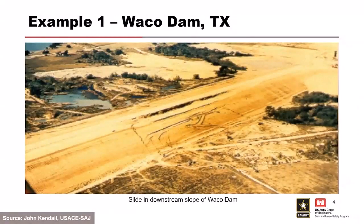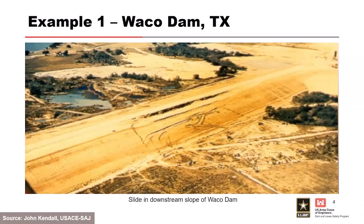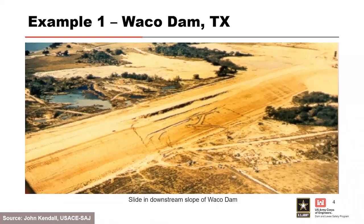The first example is Waco Dam, an Army Corps dam. During construction in 1961, a slide occurred when the embankment was approximately 83 feet tall. The slide moved about 22 feet downstream and was attributed to excess pore pressures in the clay shale foundation, along with two unmapped faults that carried pore pressures to that layer. They placed berms on the upstream and downstream sides to reduce foundation pore pressures and spread loading, stabilizing the embankment. Waco Dam is still in operation today.